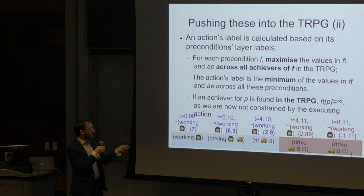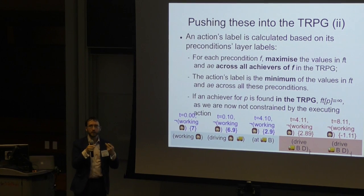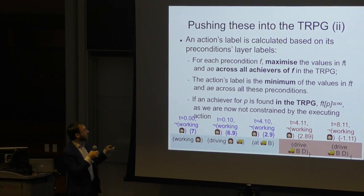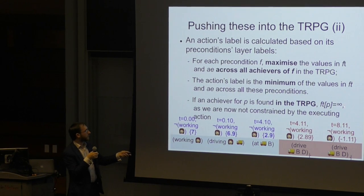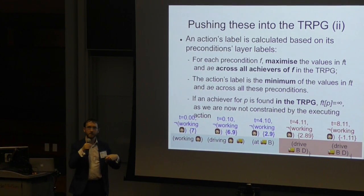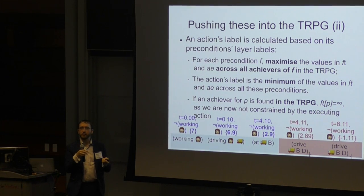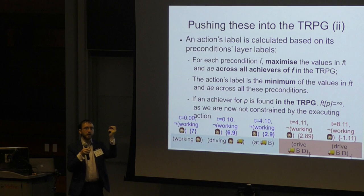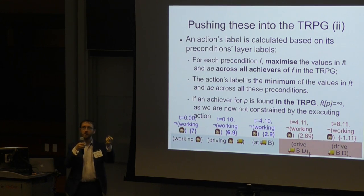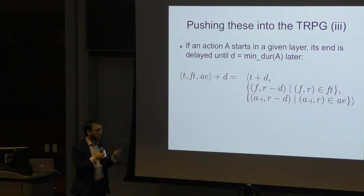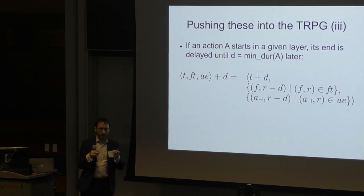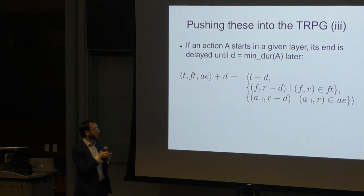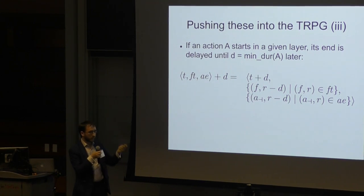One thing to note is if we find another achiever for one of these envelope facts in the planning graph, if we find another way of adding the fact working, then we can actually reset the fact time of that to infinity. So essentially it switches off this pruning once we've actually found another way of getting this fact. We've got rid of that constraint of relying on this envelope which has started but not yet finished. One other thing we need to define is because the end of an action is separated by the start according to its duration, you increment the timestamp of the layer and you decrement how long is left until facts are going to be deleted or you need to have reached the ends of actions.